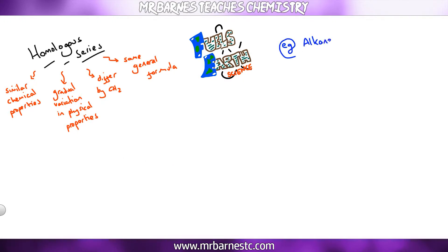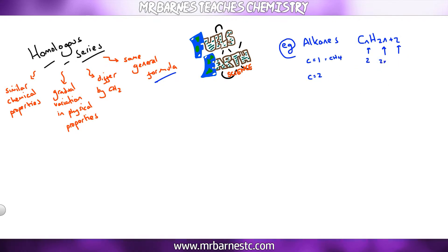Using alkanes as an example: alkanes have the general formula CₙH₂ₙ₊₂. So with one carbon (N=1), you have 2×1+2 = 4 hydrogens, giving CH₄. With two carbons (N=2), you have 2×2+2 = 6 hydrogens, giving C₂H₆. With three carbons it would be C₃H₈, and so on, as shown in my formulas.